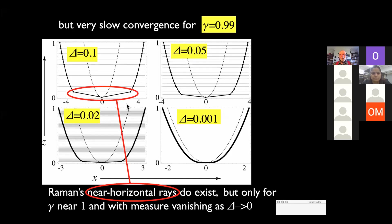This is Raman's near-horizontal ray. It does exist in this model of stratifications, but only for certain values of this offset. Mathematically, it's non-uniform convergence. And the measure of these stratifications goes to zero as the thickness of the layers goes to zero. So the continuum survives, but you see here the origin of Raman's mistake. This never actually happens because you're always in the continuum limit. So that's the mistake.